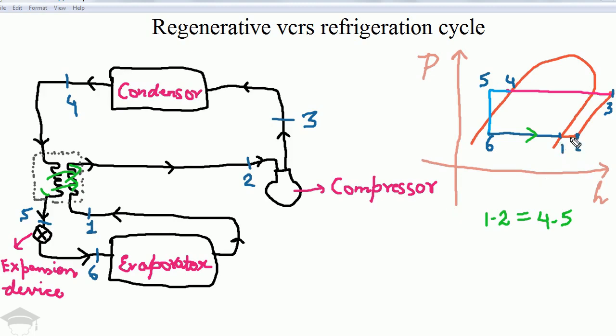Superheating from 1 to 2 is done. From 2 to 3, the pressure is increased in the compressor.